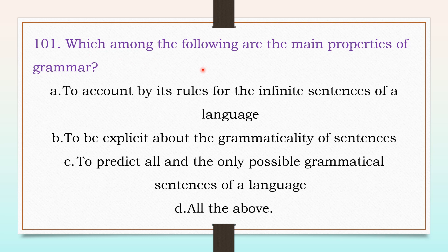Which among the following are the main properties of grammar? Options: to account by its rules for the infinite sentences of a language, to be explicit about the grammaticality of sentences, to predict all and only the possible grammatical sentences of a language, or all the above. The answer is: all the above.